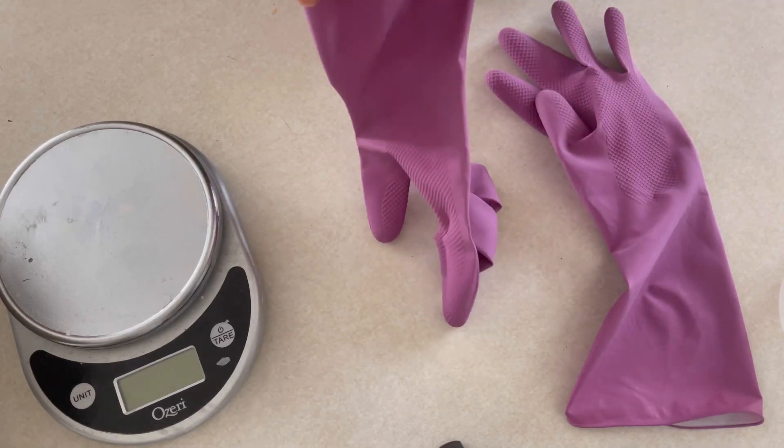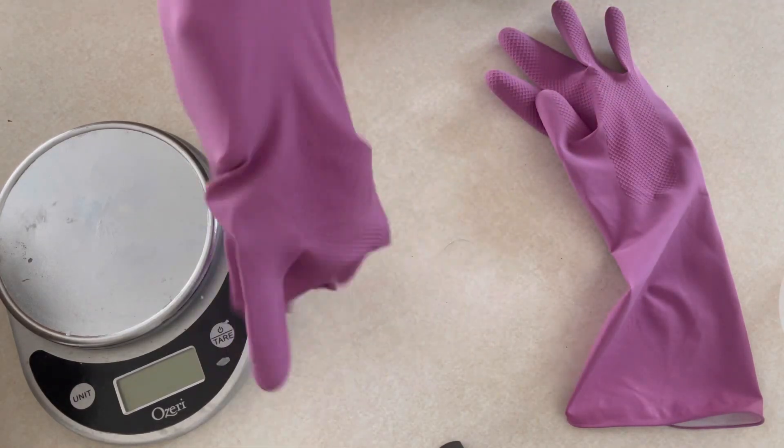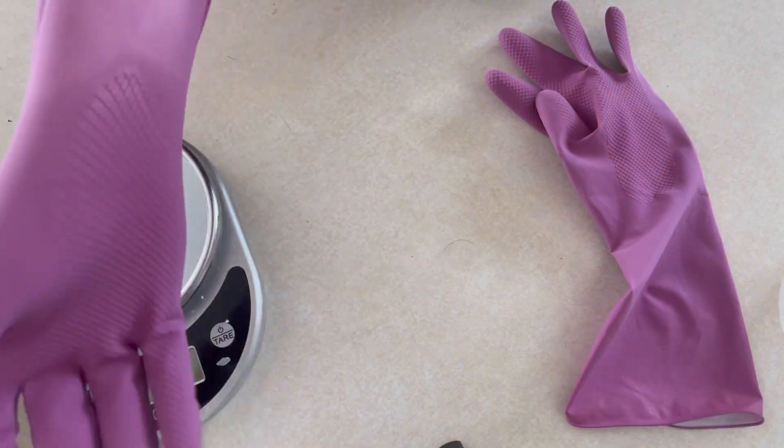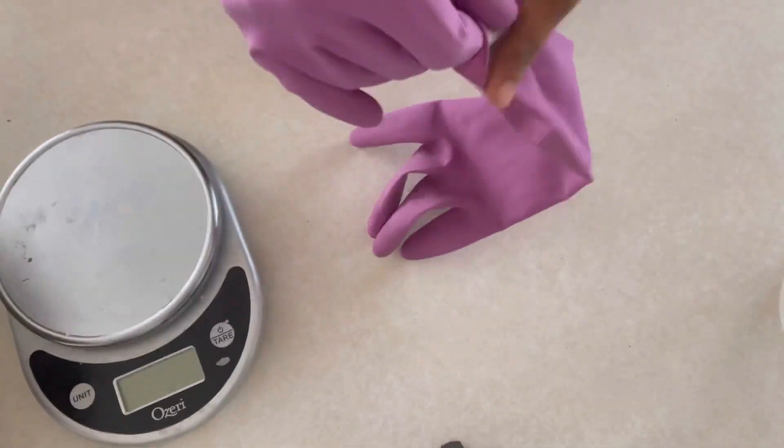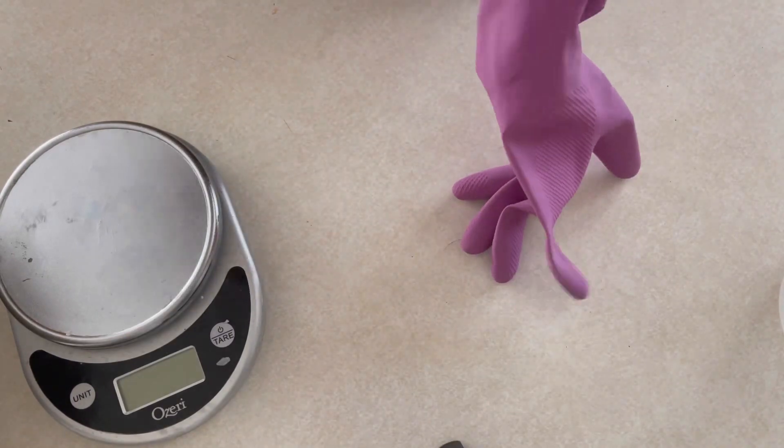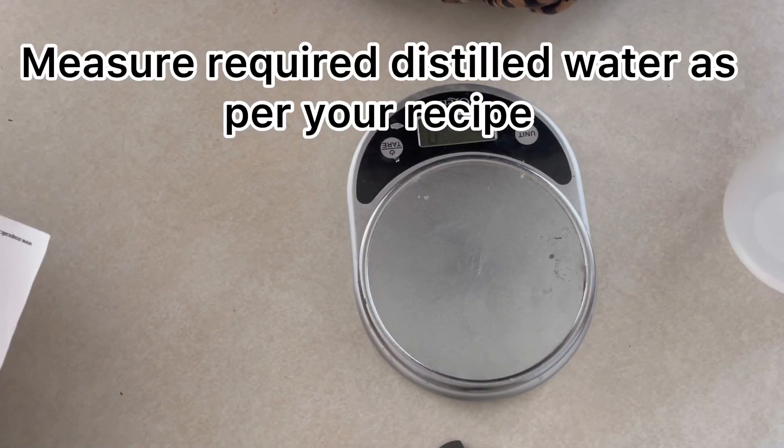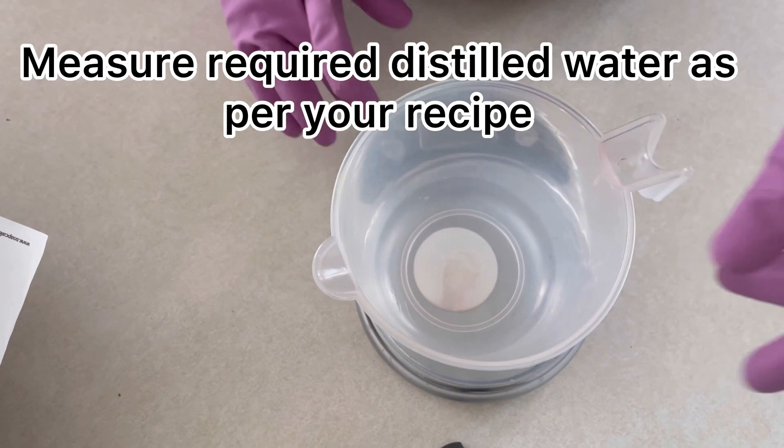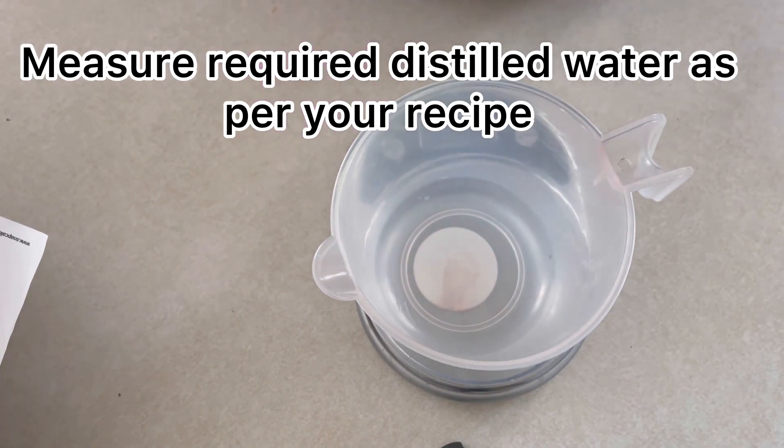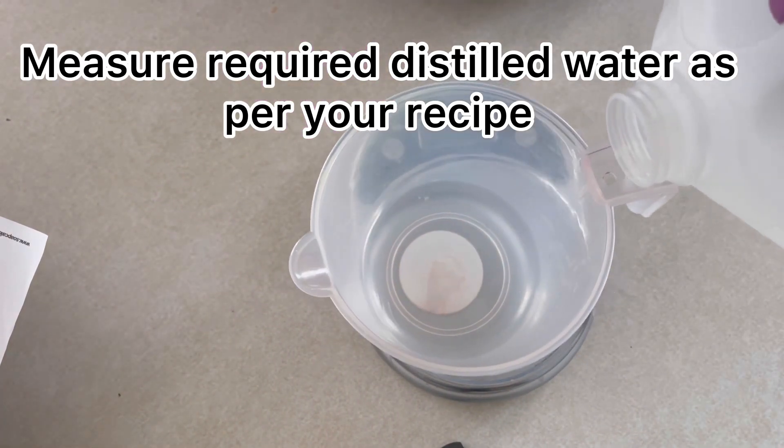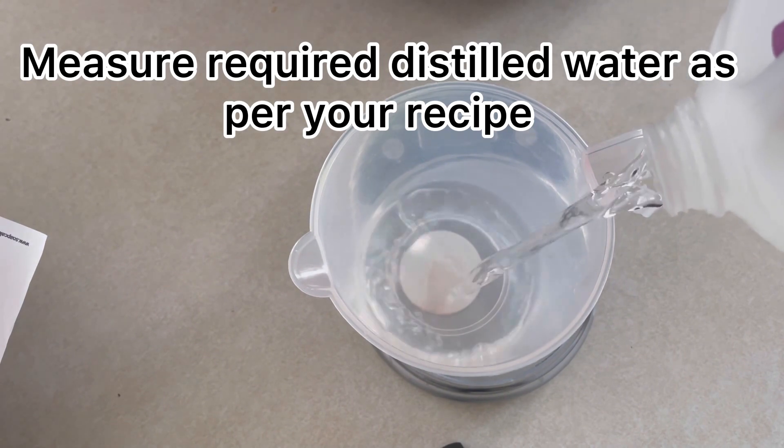You may be familiar with sodium hydroxide which is used to make solid cold process soap, but today we'll cover potassium hydroxide which is used exclusively in liquid soap. Potassium hydroxide is a type of lye specifically used to make liquid soap. It is also known as potash lye or even KOH.